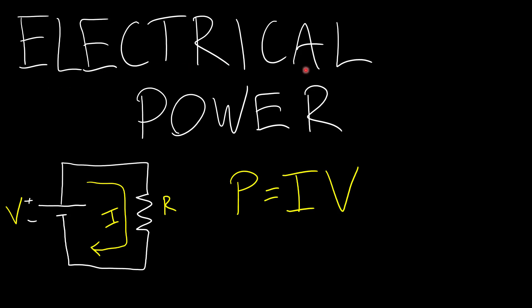All right, in this video we will talk about electrical power, the amount of power provided by a battery or dissipated by a resistor in a DC circuit. We'll talk about this equation and some alternate forms of this equation and go through a few example calculations.